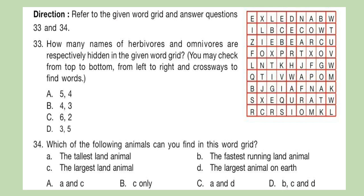Refer to the given word grid and answer questions 33 and 34. Question 33: How many names of herbivores and omnivores are respectively hidden in the given word grid? You might check from top to bottom, left to right, and crossways to find words. Question 34: Which of the following animals can you find in the word grid?